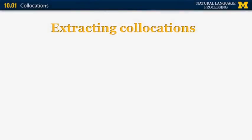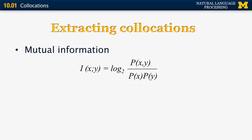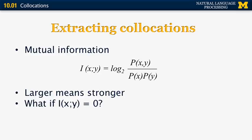Let's look at some techniques for extracting collocations that work. One of the most common is based on mutual information. The mutual information I between two random variables is the log of the ratio of the joint probability divided by the product of the individual probabilities. Larger values of I mean that the collocation is stronger. If mutual information equals zero, there is no correlation between the two words and they don't form a collocation. If the value is negative, those words are actually less likely to appear together than expected by chance.